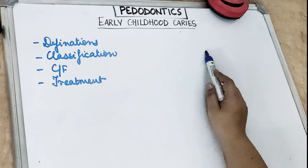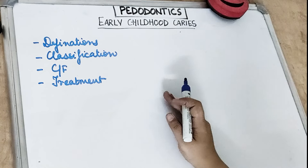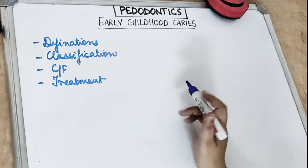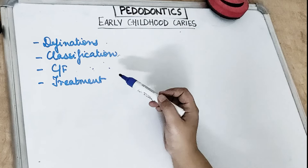Early childhood caries are dental caries which occur in very young children. They may be due to prolonged and improper feeding habits, and most of the time it's poor oral hygiene. This video will talk about the definitions, classification, clinical features, and how to treat early childhood caries.